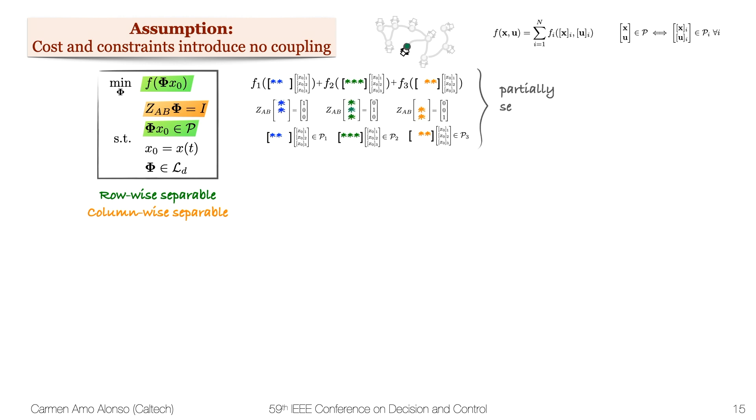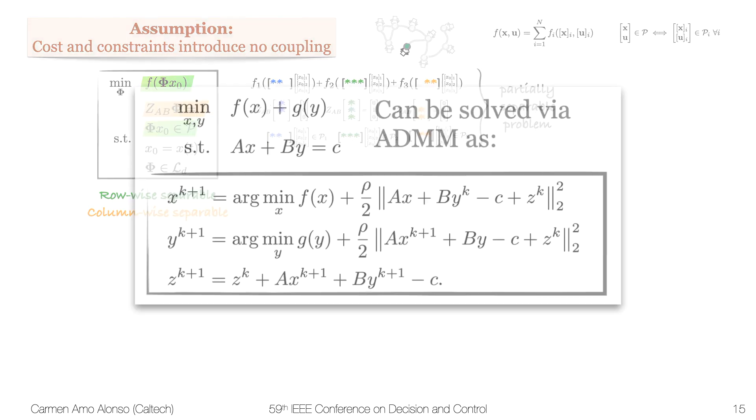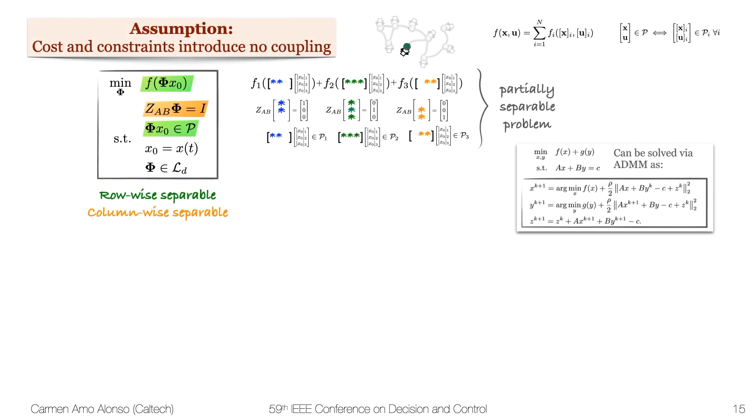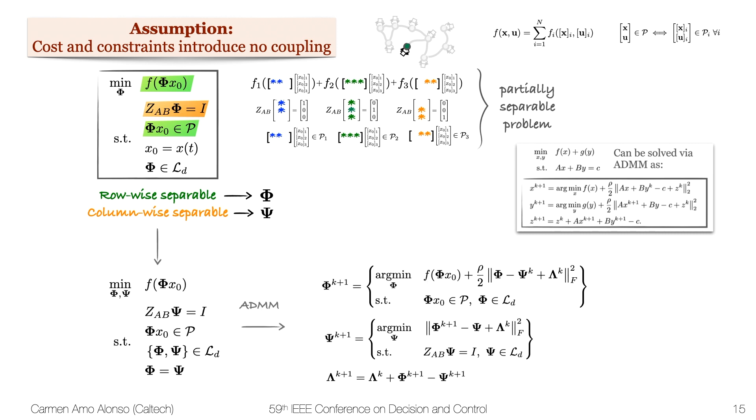This is a partially separable problem, and we can solve it via ADMM. I am not going to go into the details of the algorithm because it's a fairly known algorithm for distributed optimization, but I'm going to post it here for reference. We can use ADMM here just by setting the row-wise separable parts to phi_r and the column-wise separable parts to phi_c. Since they have to be equal, the problem becomes what follows. Here is where we can apply ADMM.